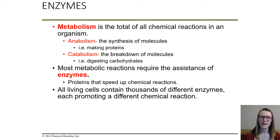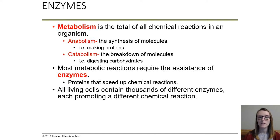How do we get energy? We get energy through our food, but how does our food become energy? The short answer is through metabolism. Metabolism is the total of all chemical reactions in an organism, and metabolism is then broken down into two different classes: anabolism and catabolism.